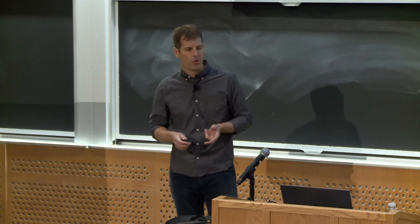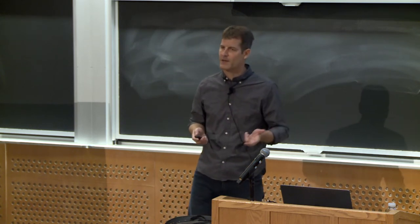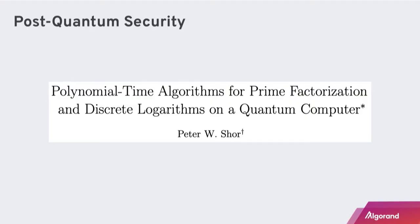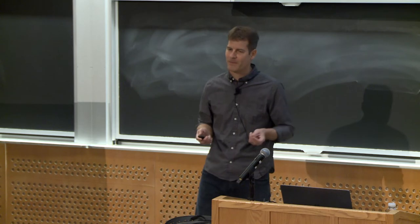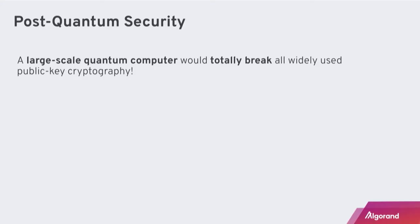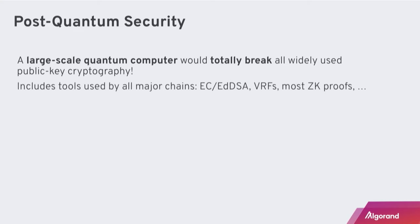The second goal is post-quantum security. Our story starts in 1994 when Peter Shor, now a professor here at MIT, published a paper called 'Polynomial Time Algorithms for Prime Factorization and Discrete Logarithms on a Quantum Computer.' Bottom line: a large-scale quantum computer, were it ever built, would totally break all of the widely used cryptography we have ever used. This includes digital signature algorithms, verifiable random functions, most zero-knowledge proofs — everything used throughout all major blockchains today.